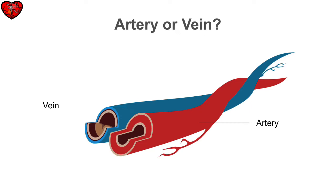Because arteries and veins often travel closely together, it's really hard to know what you are hitting without ultrasound. Knowing the difference between an artery and a vein is essential for using ultrasound to guide central venous line placement. Ideally, the artery is not the target for central lines, but can be used for arterial lines.